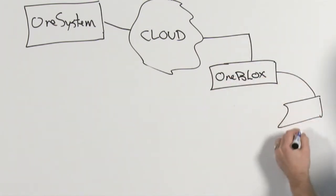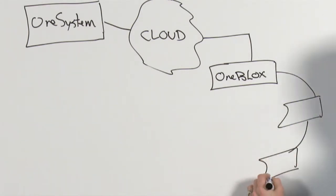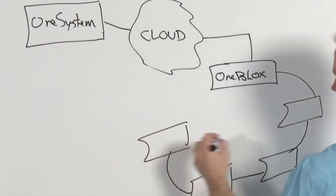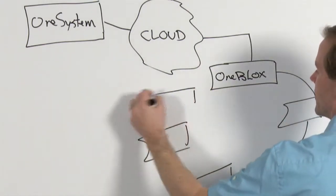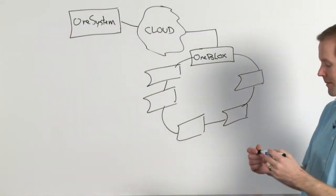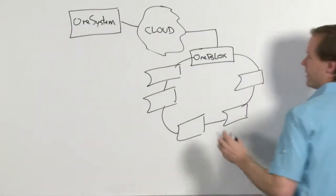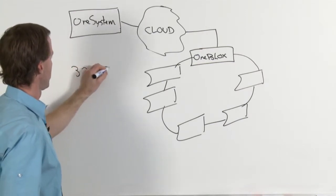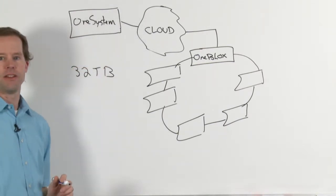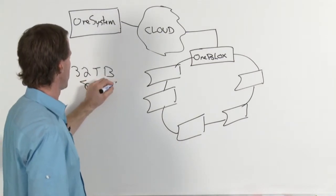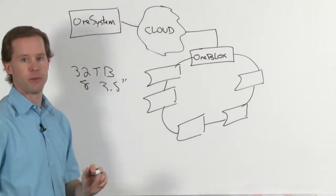And these, in our V1 product, you can have up to six of these devices in your setup. And each device is 32 terabytes of capacity today. That's using four terabyte hard drives. It's eight 3.5 inch hard drives, hard drive bays.